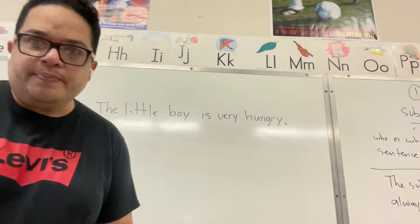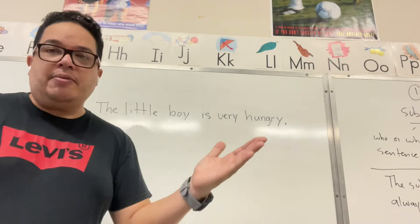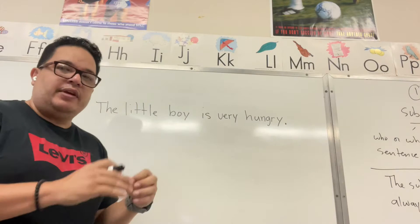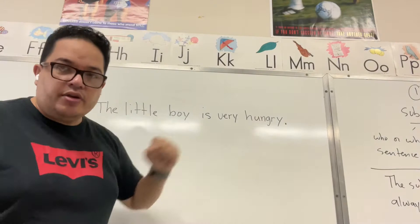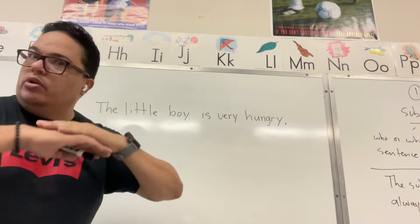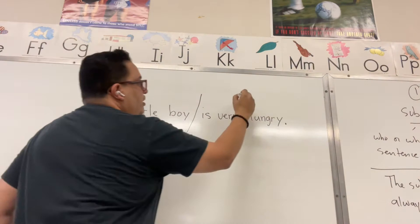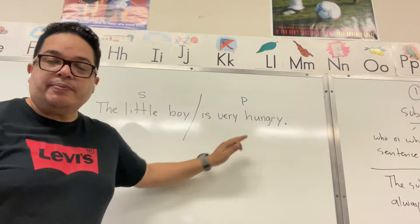So let's divide the sentence into subject and predicate — complete subject and complete predicate. Then inside of the subject and inside of the predicate, we will specify what is the simple subject and what is the simple predicate. The sentence reads: the little boy is very hungry. We all know that the word 'is' will always be a verb. The action will begin there, so that's where we divide the sentence. All of this is the complete subject and all of this is the complete predicate.